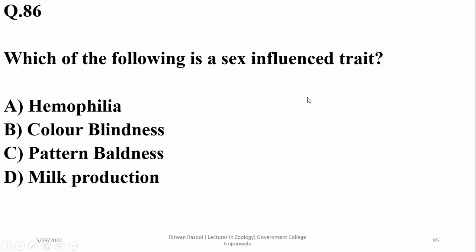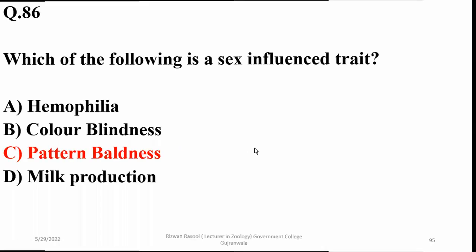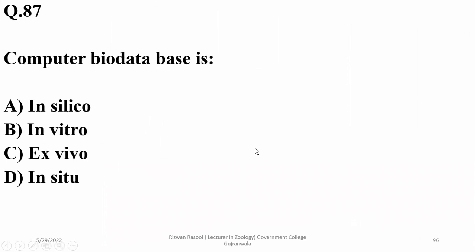Question 86: Which of the following is a sex-influenced trait? Right option is Charlie. Color blindness — alpha or beta traits — they are not sex-influenced; they are sex-linked or X-linked traits. Milk production is called a sex-limited trait.